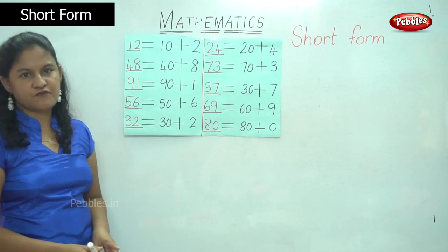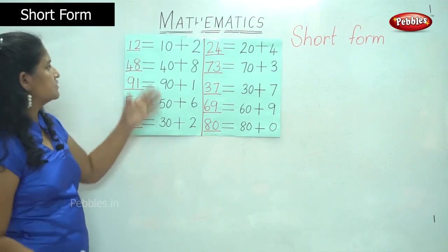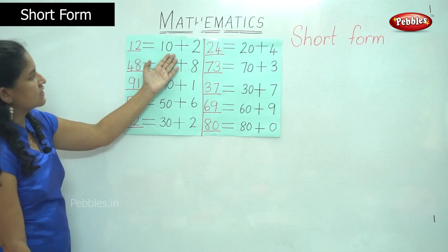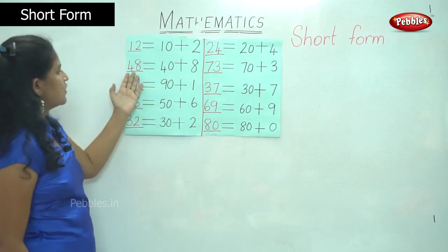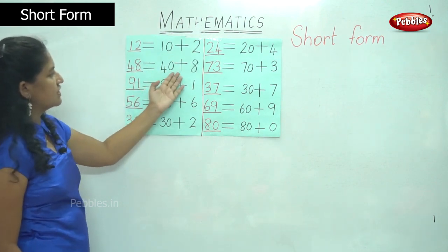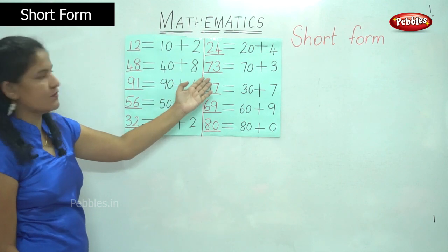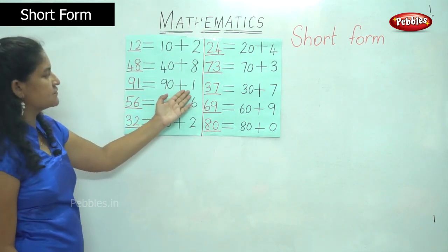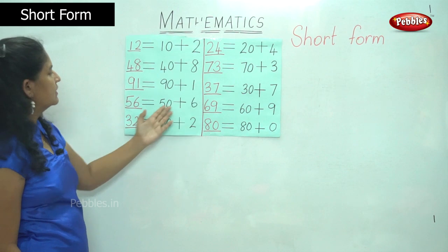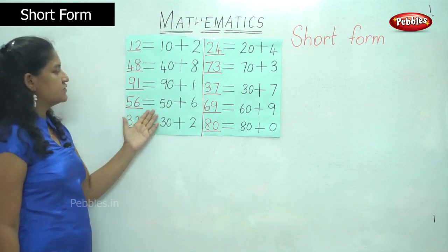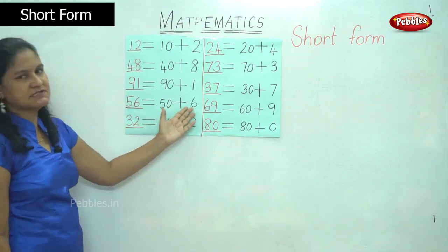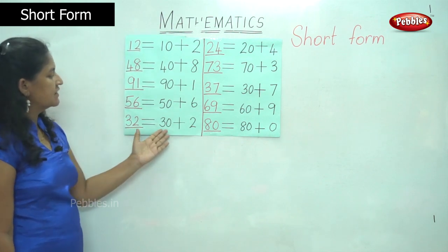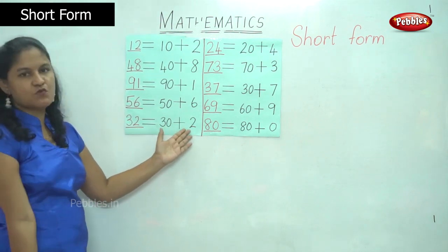So this is the short form of the numbers. 12 gives me 1 ten or 10 plus 2 ones. 48 gives me 4 tens or 40 plus 8 ones. 91 gives me 9 tens or 90 plus 1 one. 56 is equal to 5 tens or 50 plus 6 ones. 32 gives me 3 tens or 30 plus 2 ones.